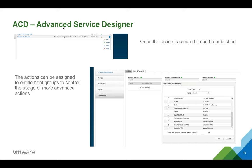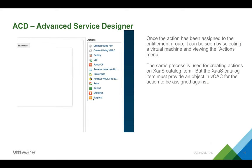Actions aren't tied to blueprints or virtual machines — they're tied to entitlement groups, which then tie them to users' resources. For example, if you've published a Windows 2012 blueprint but only want half a dozen users to be able to rename virtual machines, you publish the action to just those users' entitlement group. You can see in the screenshot that we've published the action, the rename virtual machine action is visible alongside their virtual machines, and when clicked it takes you to the form we created, and the VCO workflow executes in the background.